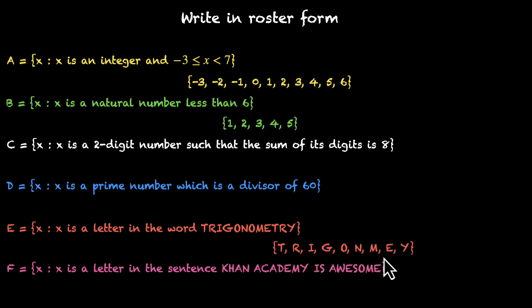So we have T, R, I, G, O, N, M, E, Y. That's it. That's our set in the roster form.